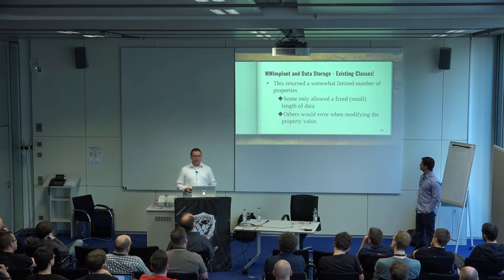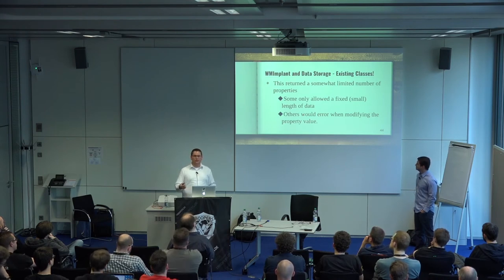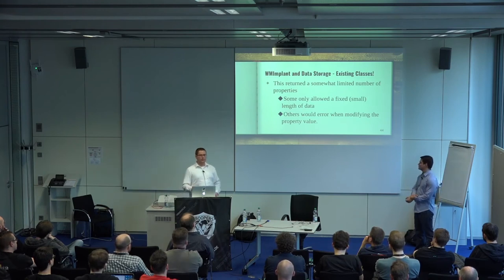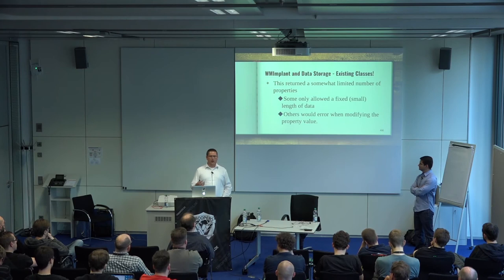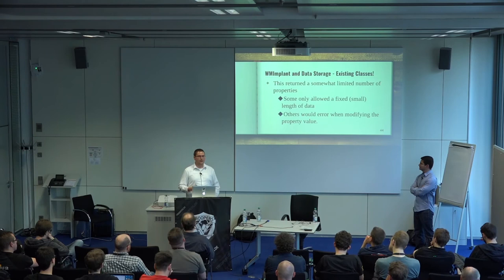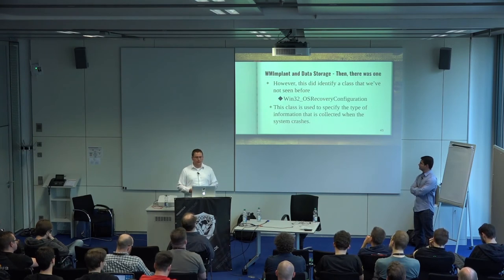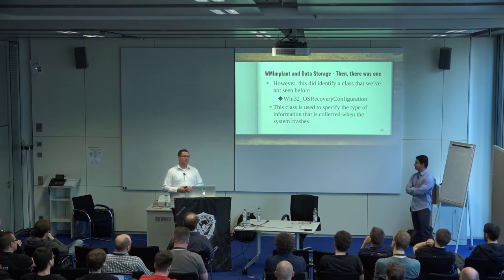We got some results, but it returned a somewhat limited number of properties — not a giant list. Some only allowed a small fixed length of data, not something usable for C2 or data storage. Others gave odd errors like 'generic failure' when attempting to modify, with no extra information to debug. However, this led us to identify a class I hadn't seen before: the Win32_OSRecoveryConfiguration class.